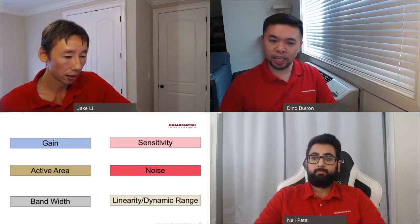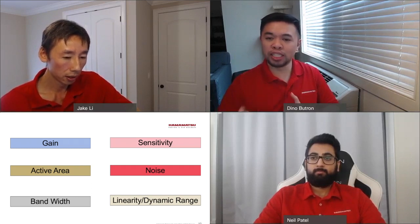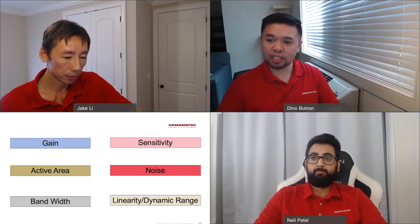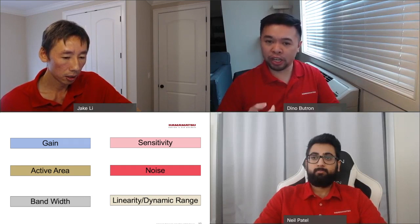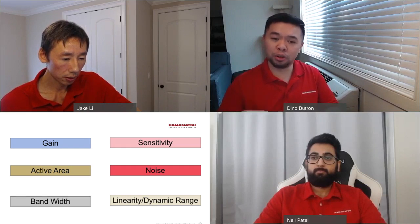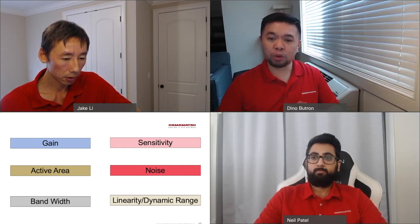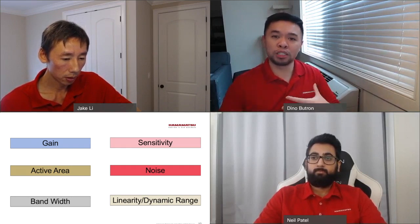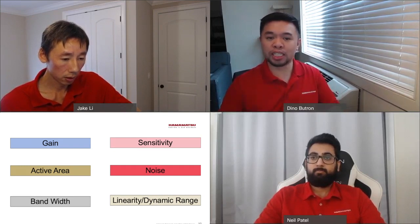To properly select the right detector, you really need to consider six key parameters: gain, sensitivity, active area, noise, bandwidth, and linearity and dynamic range. Gain — more specifically intrinsic gain — elevates the signal from the detector above readout noise, which is its key advantage. Sensitivity is a combination of quantum efficiency, which is the ratio of converting photons to photoelectrons or output, and the gain. Those two combined constitute sensitivity.